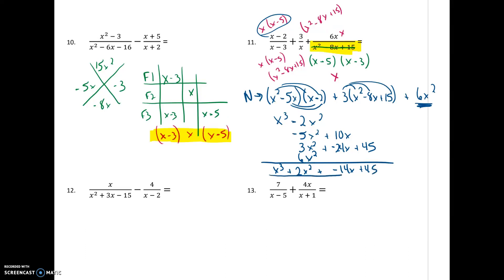That's going to be over my least common denominator, which is x times x minus 5 times x minus 3. Do not forget the denominator in your answer, even though the majority of the work came from your numerator.